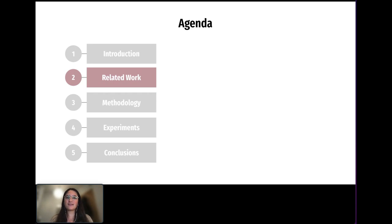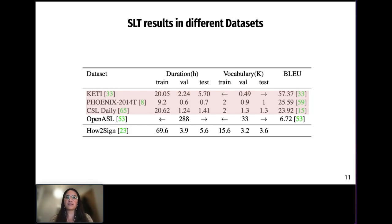The next section is related work, so let's dive into it. This table shows the current state-of-the-art in terms of the BLEU metric for different sign language translation benchmarks. Some reasonable BLEU scores have been reported in mainly three datasets of limited vocabulary size and restricted domains.